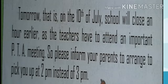One more example of an announcement: 'Tomorrow, that is on 10th of July, school will close an hour earlier. As a teacher, you have to attend an important 3 p.m. meeting. Please inform your parents to arrange to pick you up at 2 p.m. instead of 3 p.m.' So here notice has been given, telling that instead of 3 p.m. the school will leave at 2 p.m., with the reason already stated — one day in advance.